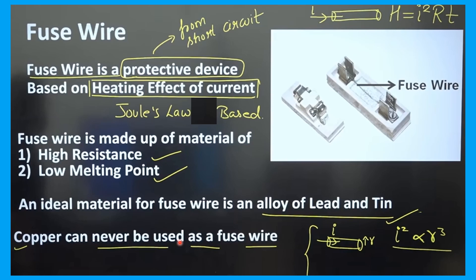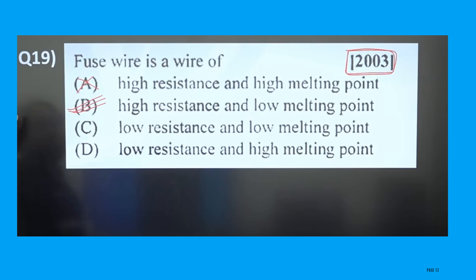Copper cannot be used as a fuse wire because copper is a good conductor — it will easily allow high current to pass, damaging other devices. We use fuse wire made of an alloy of lead and tin to protect appliances. MCQ: Fuse wire is a wire of — Option B — high resistance and low melting point. This is the correct answer.